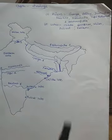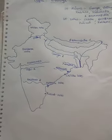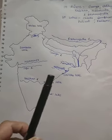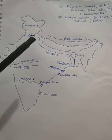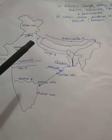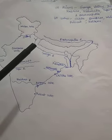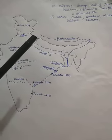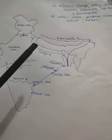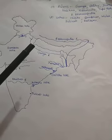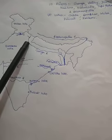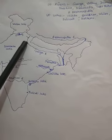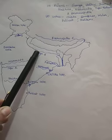Let us start with Ganga. As you know, Ganga is originated from Gangotri glacier. The headwater of the Ganga is called the Bhagirathi. Basically, in Uttarakhand, Bhagirathi and Alaknanda join at Dev Prayag in Uttarakhand. So here is where the Ganga originates, and it flows through the following states: Uttarakhand and Uttar Pradesh.